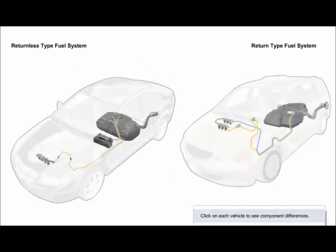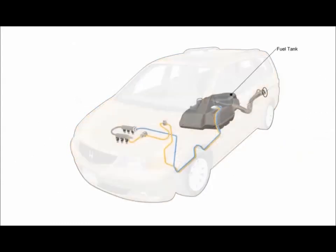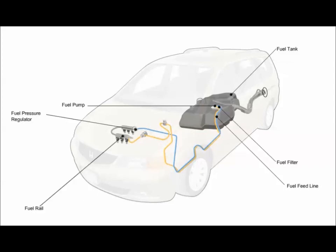There are two types of fuel systems used on both Honda and Acura vehicles, return type and returnless type. Both systems contain similar components but deliver fuel in slightly different ways. Return type fuel supply system has a fuel tank, fuel pump, fuel lines, fuel filter, fuel rail with injectors, pressure regulator, and return line.